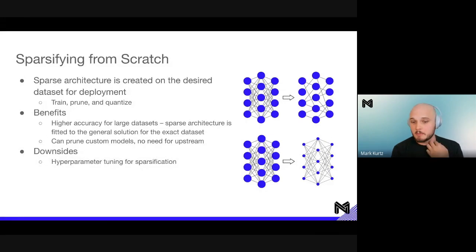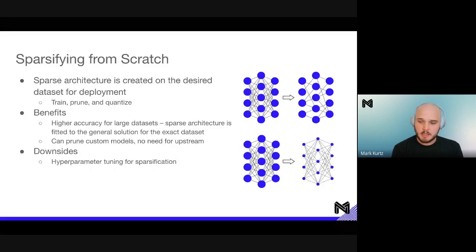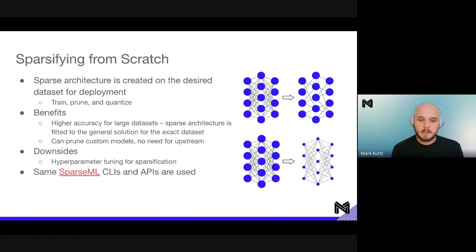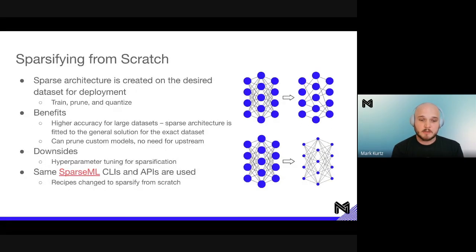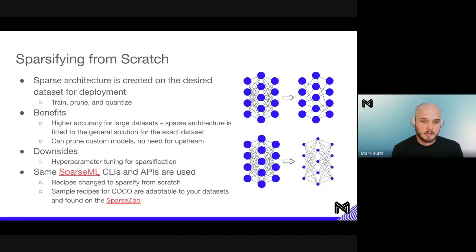The downside is we do have to do hyperparameter tuning for sparsification, which we do a lot at Neural Magic and have best practices around. We have a Slack community that enables support for this. Additionally, SparseML CLIs and APIs are used for the exact same flow — recipes are changed to sparsify from scratch. We have sample recipes for COCO that are adaptable to your datasets at any time on the SparseZoo, and you'll use the exact same CLIs that we kicked off for sparse transfer.